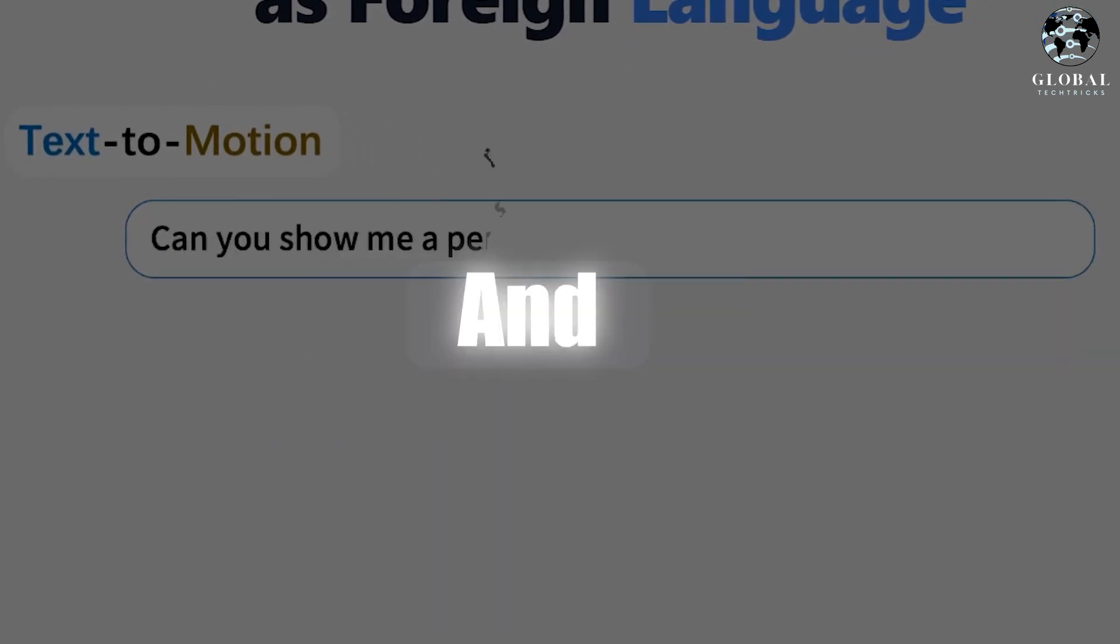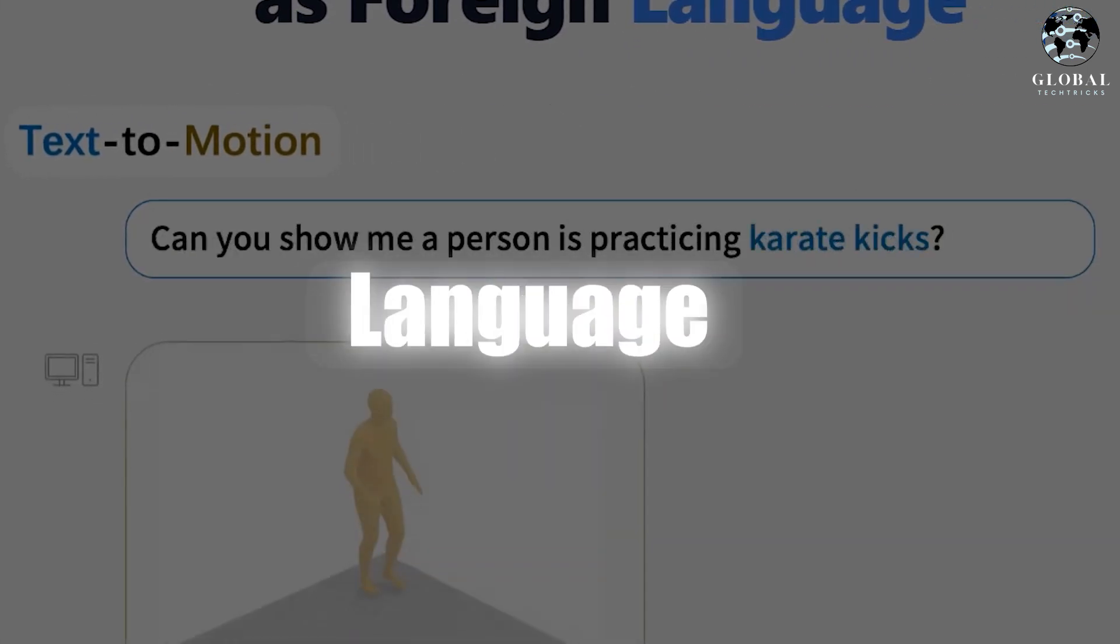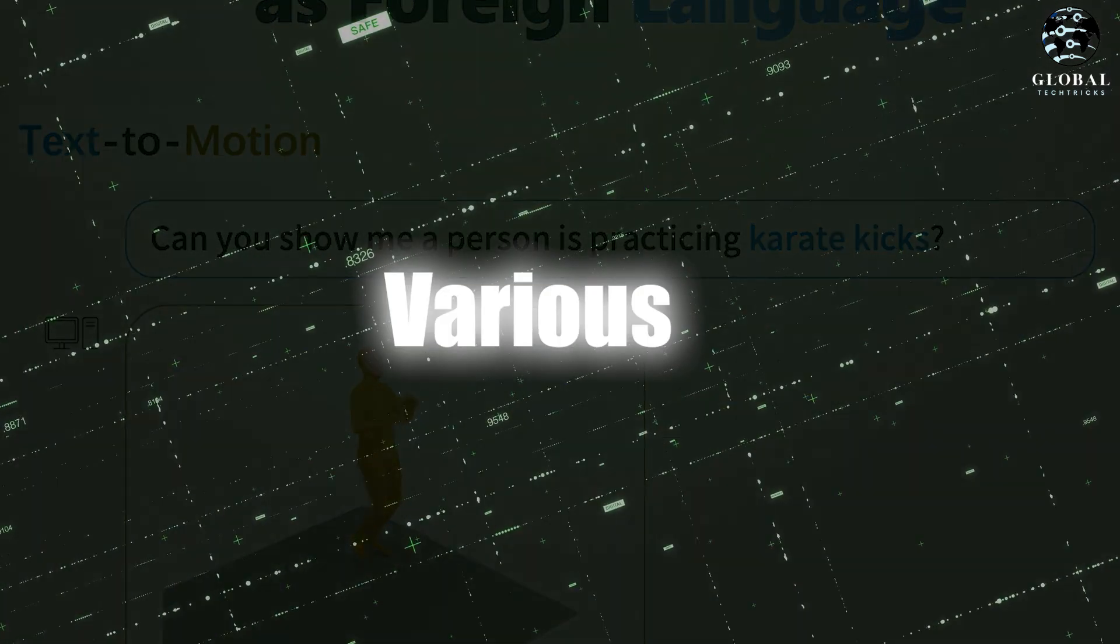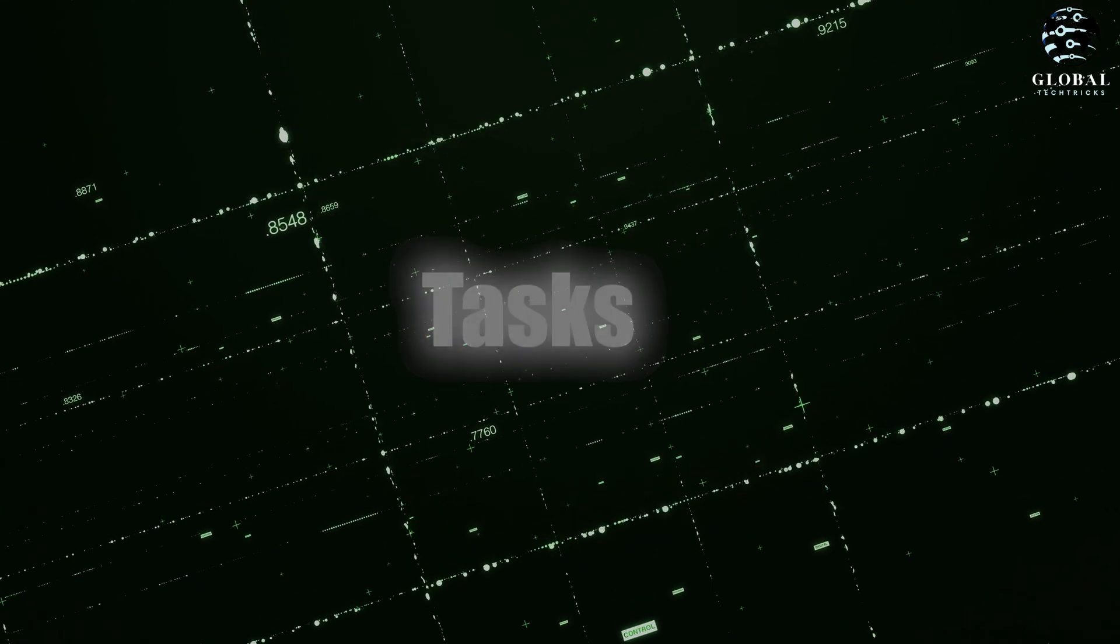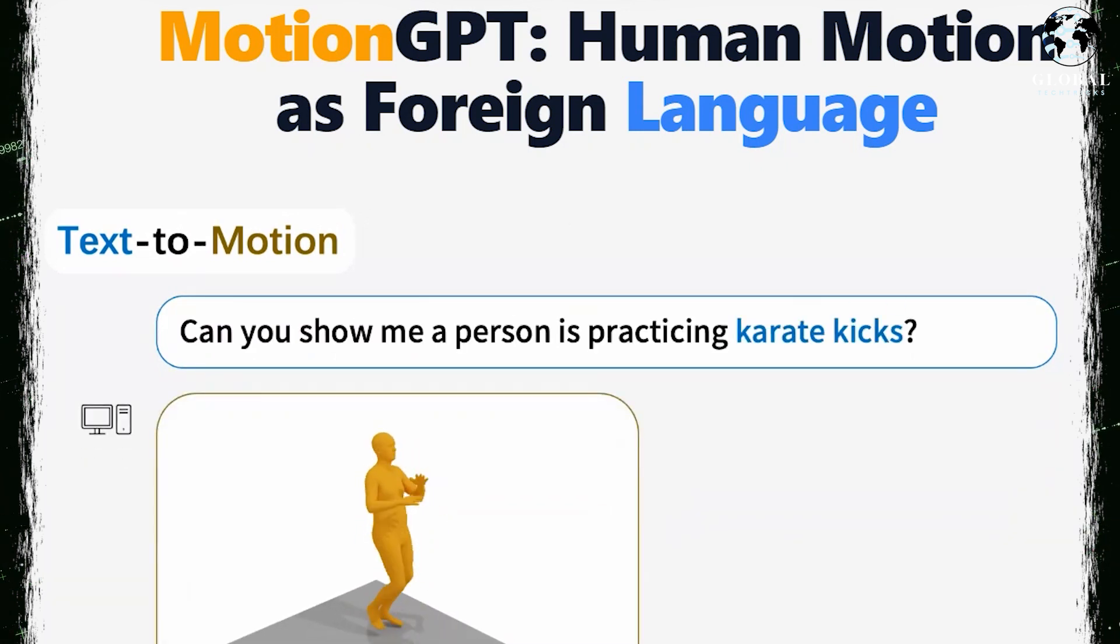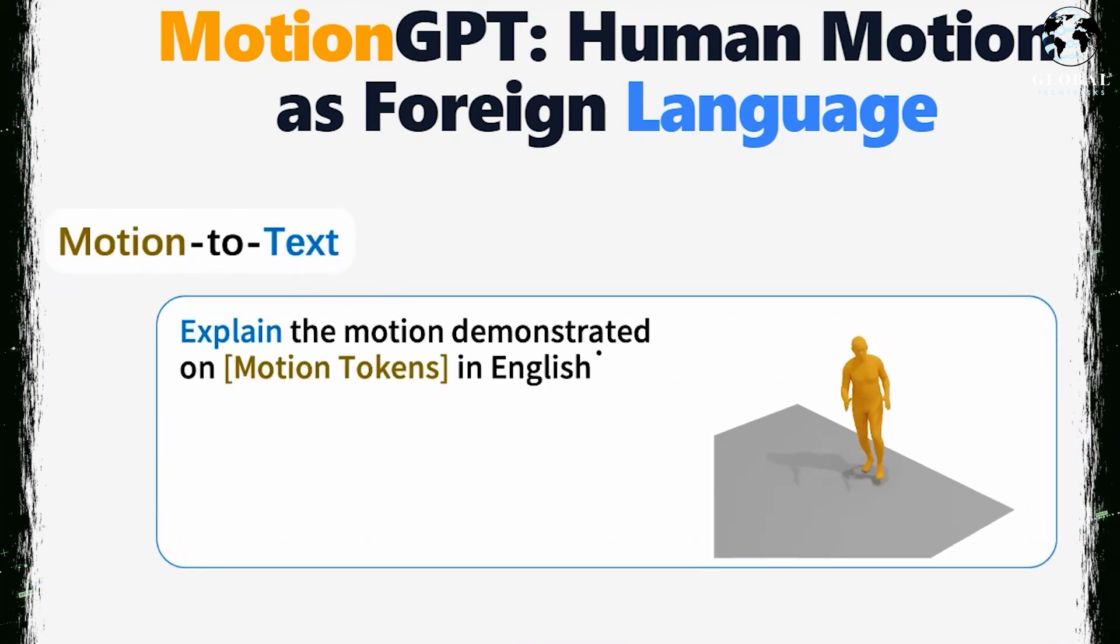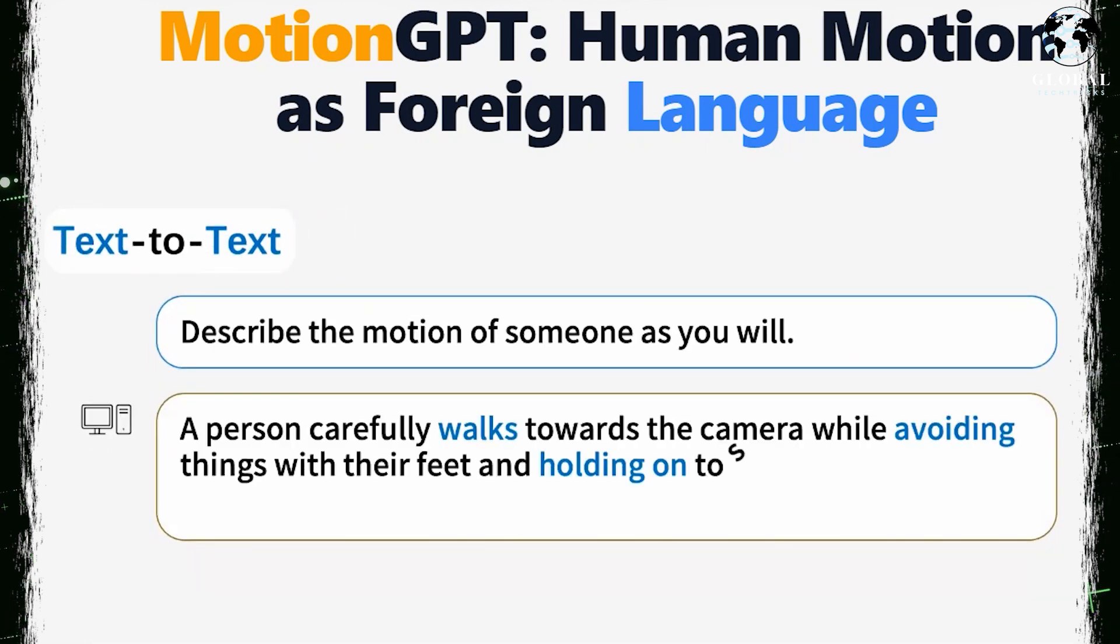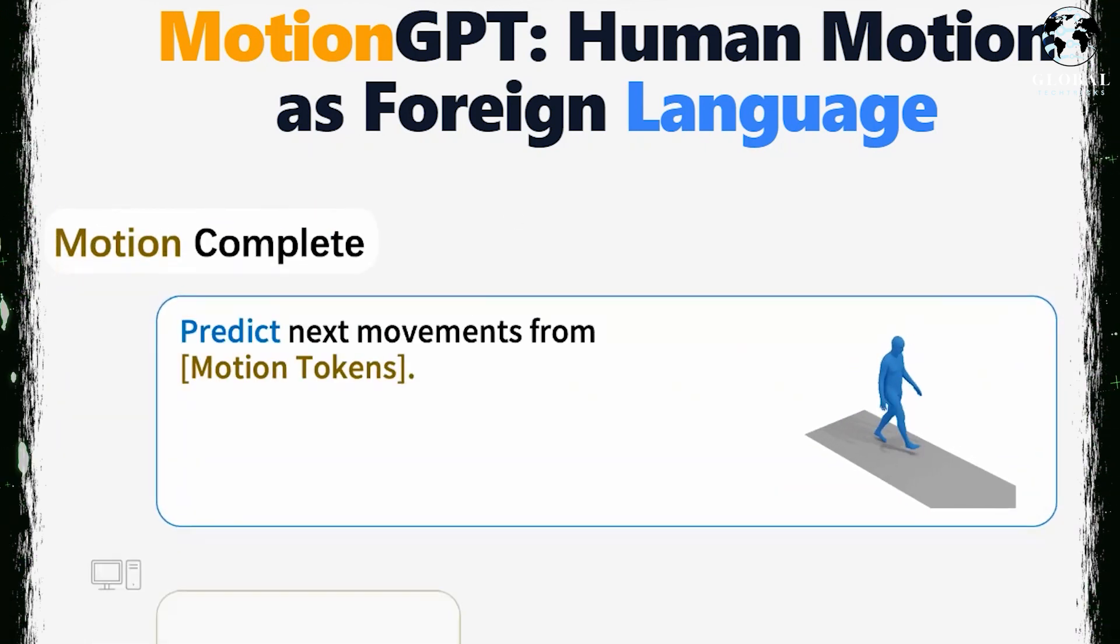Motion GPT is an innovative and accessible model that combines language and motion to generate top-notch motions and text descriptions for various motion-related tasks. Despite the progress made in large language models, there hasn't been much exploration into developing a unified model that can effectively handle both language and other multimodal data like motion.